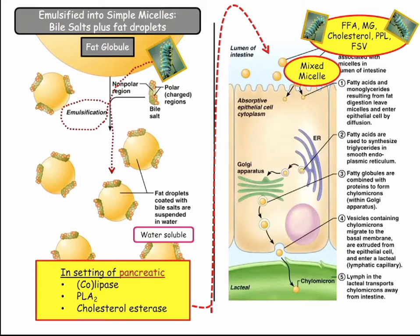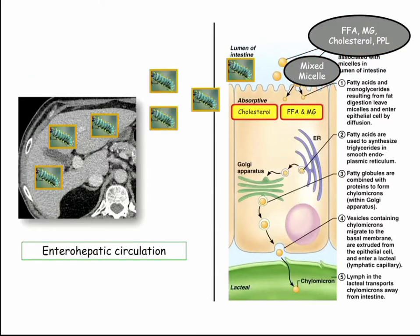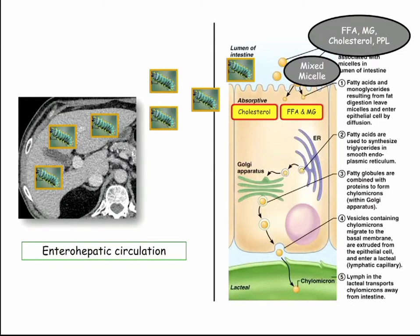The mixed micelle — cholesterol, free fatty acids, monoglycerides — are absorbed passively across the intestinal surface. The bile salts go back in the portal circulation to the liver. Whether you call them worms or bile salts, on the boards they'll be called bile salts. They go back — they're out of the picture now.